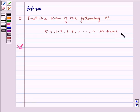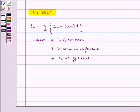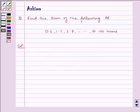Before writing the solution, let us look at the key idea to the problem. Sn equals n by 2 times 2a plus (n minus 1)d, where a is the first term, d is the common difference, n is the number of terms, and Sn is the sum of the AP.